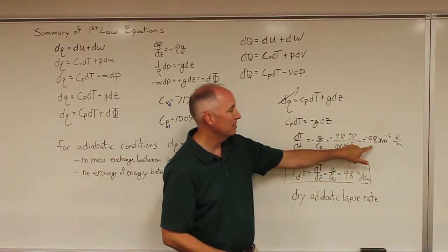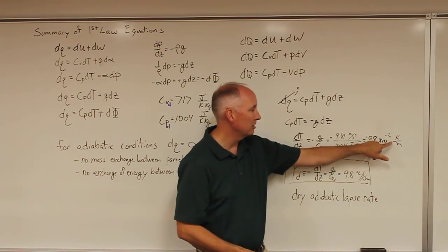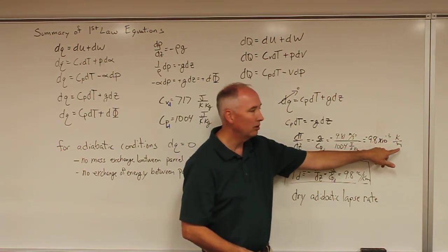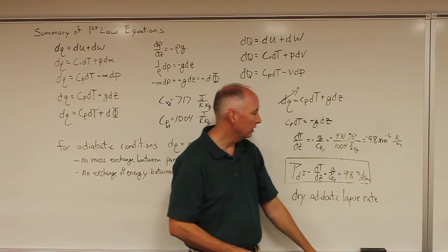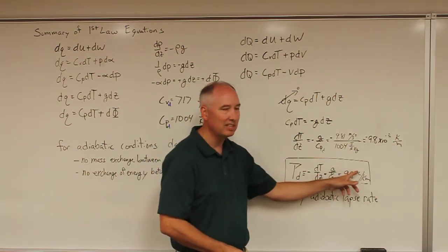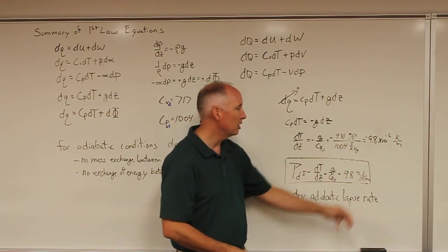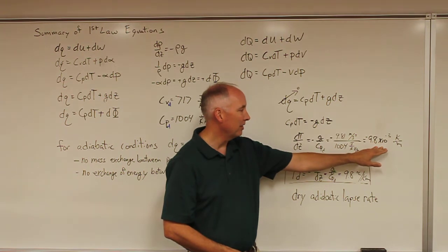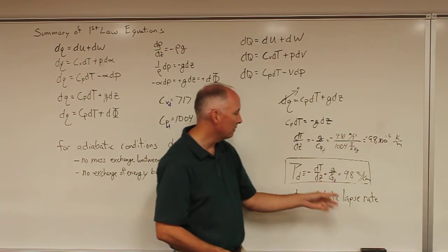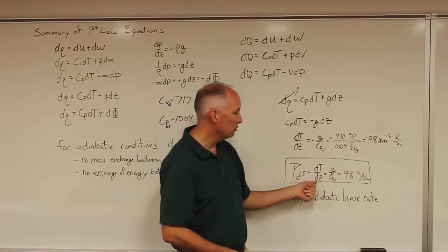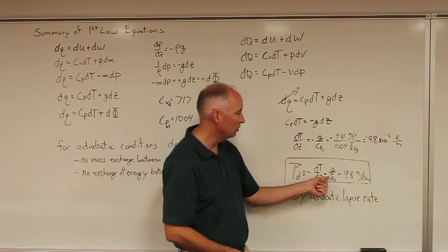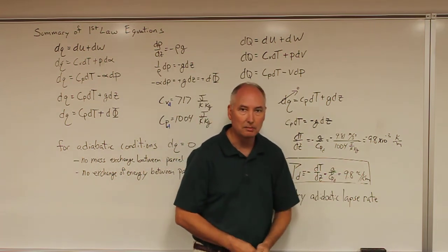If you do that, you get minus 9.8 times 10 to the minus third kelvin per meter. But we usually express that in terms of degrees Celsius per kilometer. And so you just have to multiply that by 1000 in order to end up with the lapse rate dt by dz is equal to 9.8 degrees Celsius per kilometer.